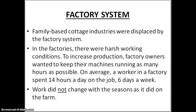So, the factory system. Family-based cottage industries were displaced by the factory system. In the factories, there were harsh working conditions. To increase production, factory owners wanted to keep their machines running as many hours as possible. On average, a worker in a factory spent 14 hours a day on the job, six days a week. Work did not change with the seasons as it did on the farm. Family-based cottage industries were back when goods were made in the home by hand, and the rise of factories made these go away. Factories brought machines, and machines made goods quickly and cheaply.